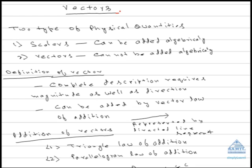However, there are quantities which cannot be added algebraically, that is like a number. For example, displacement. Displacement cannot be added algebraically. Let's understand it with an example. Suppose a particle goes from point A to B, then it goes from B to C.